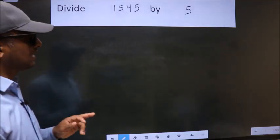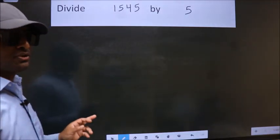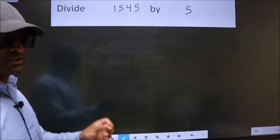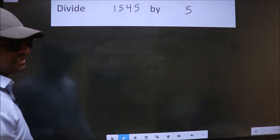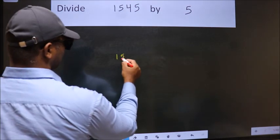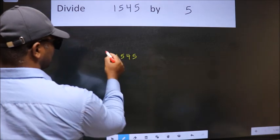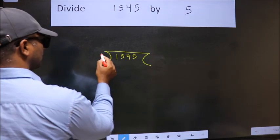Divide 1545 by 5. To do this division, we should frame it in this way. 1545 here, 5 here.